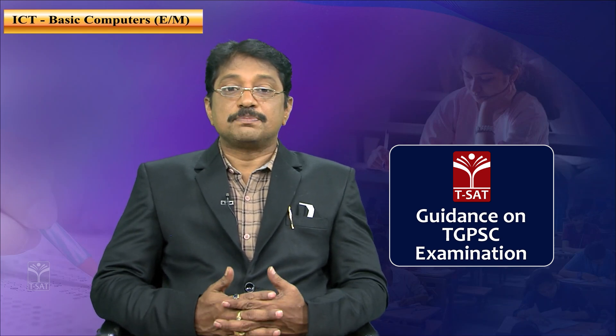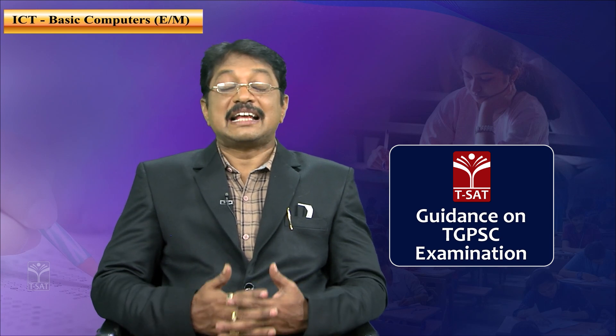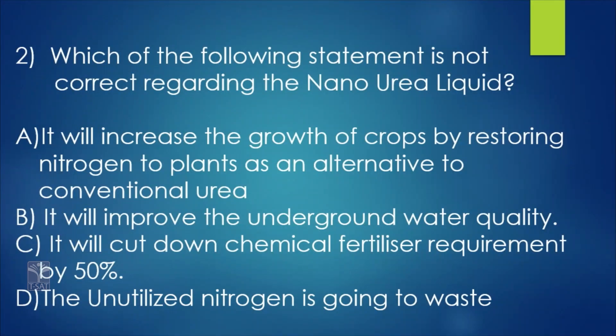Now we will see a second question. The first question was which state has the nano urea liquid plant — the answer is Gujarat. The second question: 'Which of the following statements is not correct regarding nano urea liquid?' The four options are: A — it increases the growth of crops by restoring nitrogen to plants as an alternative to conventional urea; B — it improves underground water quality; C — it cuts down chemical fertilizer requirement by 50 percent; D — the unutilized nitrogen is going to be wasted.